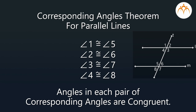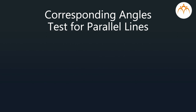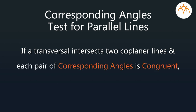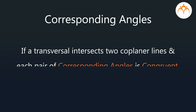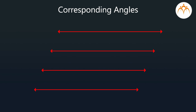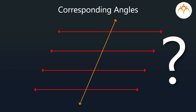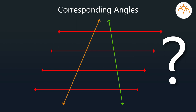Whereas in the case of parallel lines, we have seen that each pair of corresponding angles is of congruent angles. This brings us to a conclusion that if a transversal intersects two coplanar lines and each pair of corresponding angles is congruent, then those two lines are parallel. Well, if we have more than two parallel lines intersected by a transversal, how many pairs of corresponding angles will be formed? Will these pairs also be of congruent angles? And what if we have more than two parallel lines intersected by more than one transversal? Think about it.